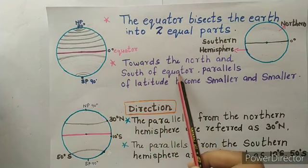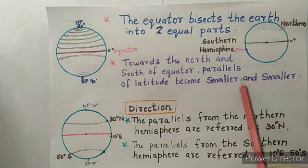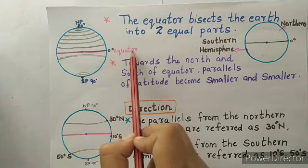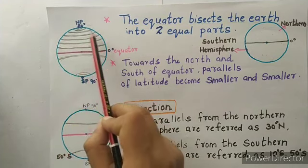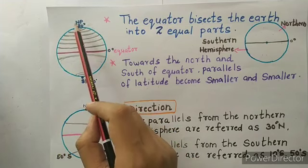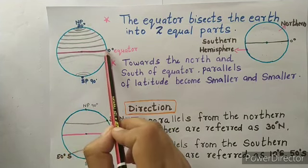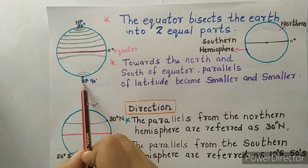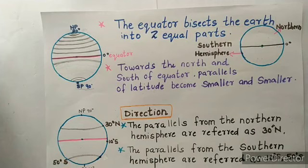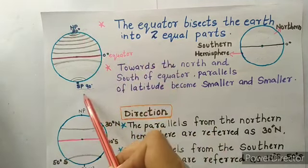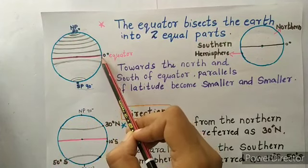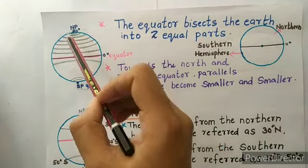Towards the north and south of the equator, parallels of latitudes become smaller and smaller. This pink line is the 0 degree latitude called the equator, and the parallels become smaller and smaller as we reach the north pole. The same applies in the southern hemisphere — the parallels become smaller and smaller until they are reduced to one small point, which becomes the south pole. This is because we are dealing with a sphere, so close to the equator latitudes are bigger and near the poles they are smaller.